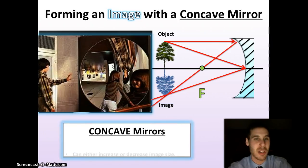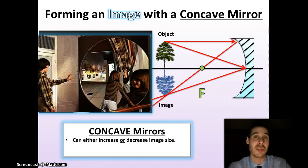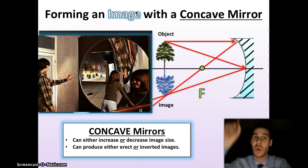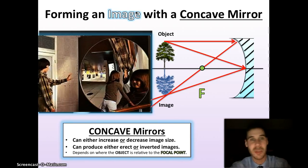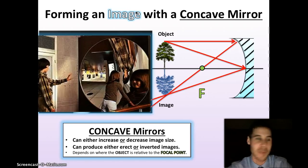To summarize concave mirrors: number one, a concave mirror can either increase or decrease the size of an image; number two, it can produce either erect or inverted images; and number three, it's a little temperamental — it depends on where the object is relative to the focal point. That's where I'll end it today. Thank you for bearing with me through this screencast experience. We will talk more on this later on.